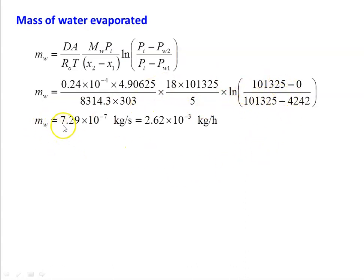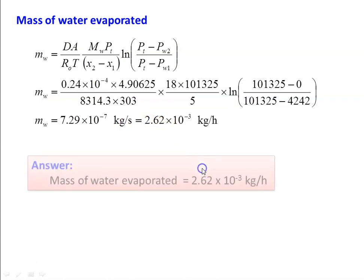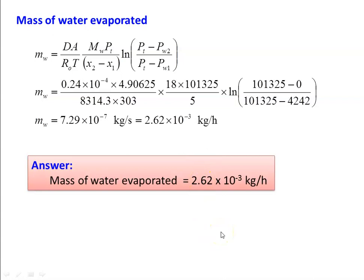Calculating the values, MW equal to 7.29 into 10 power minus 7 kilogram per second, or 2.6 into 10 power minus 3 kilogram per hour. The mass of water evaporated is 2.6 into 10 power minus 3 kilogram per hour.